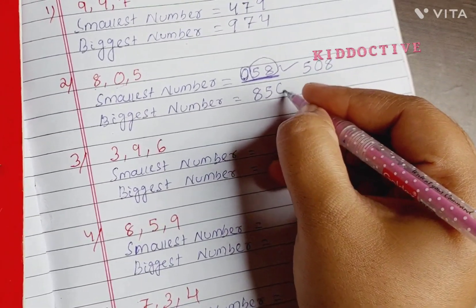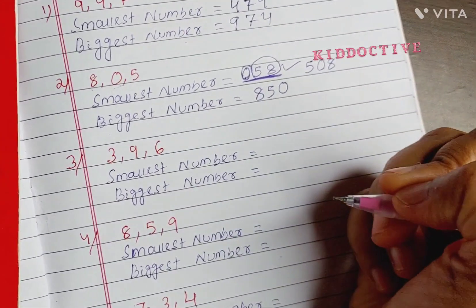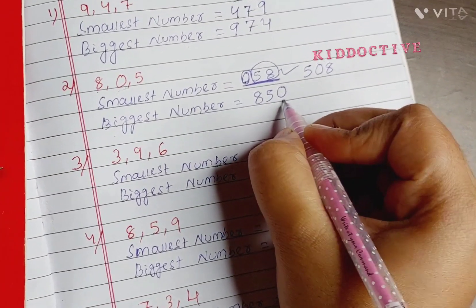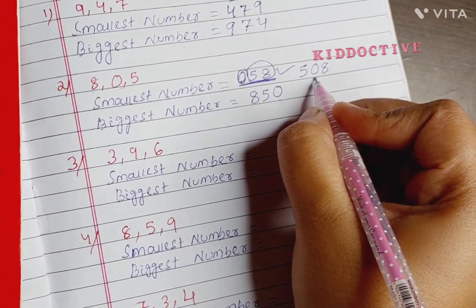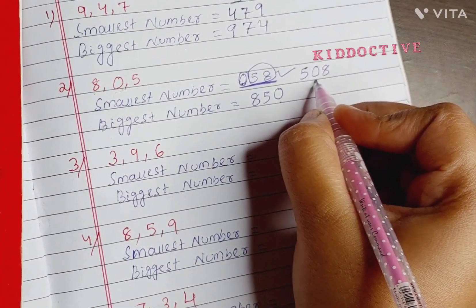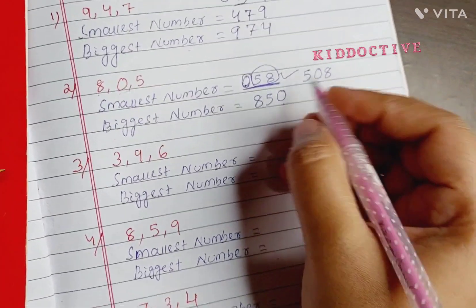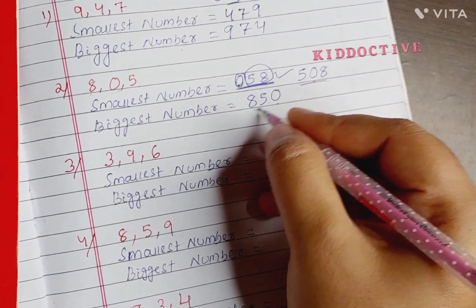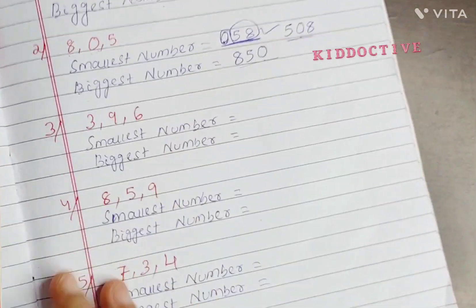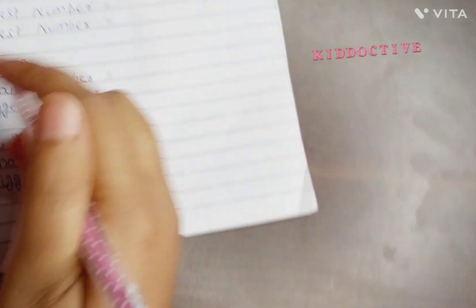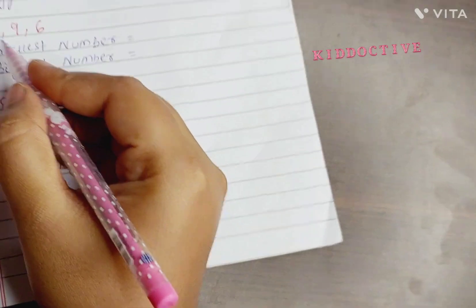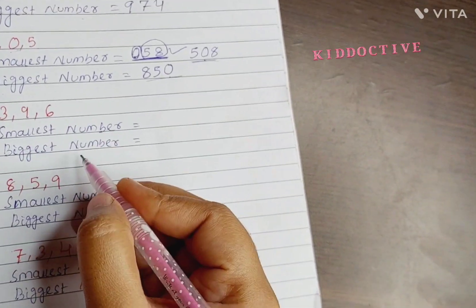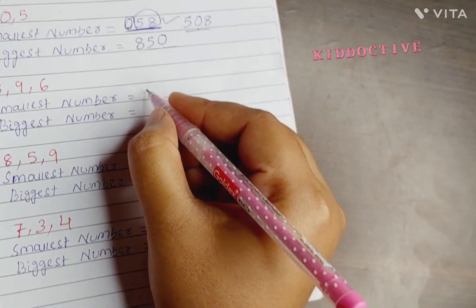Now coming to the biggest number from 8, 0, 5: the biggest number will be 8, then 5, then 0 — so 850. When we write zero at the end or zero in the tens place, that will still be a three-digit number.